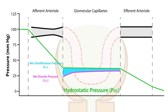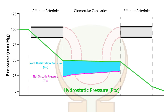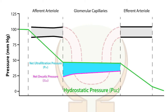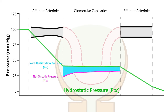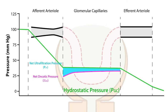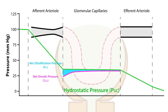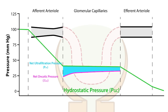We also see a minor increase in net oncotic pressure, as shown by the pink line, which contributes towards the further decrease in net ultrafiltration pressure, or GFR. Net oncotic pressure increases slightly because, as renal plasma flow declines, the fluid in the glomerular capillaries has more time to be filtered, which concentrates the nonpermeable solutes within the glomerular capillaries, thus increasing the net oncotic pressure.